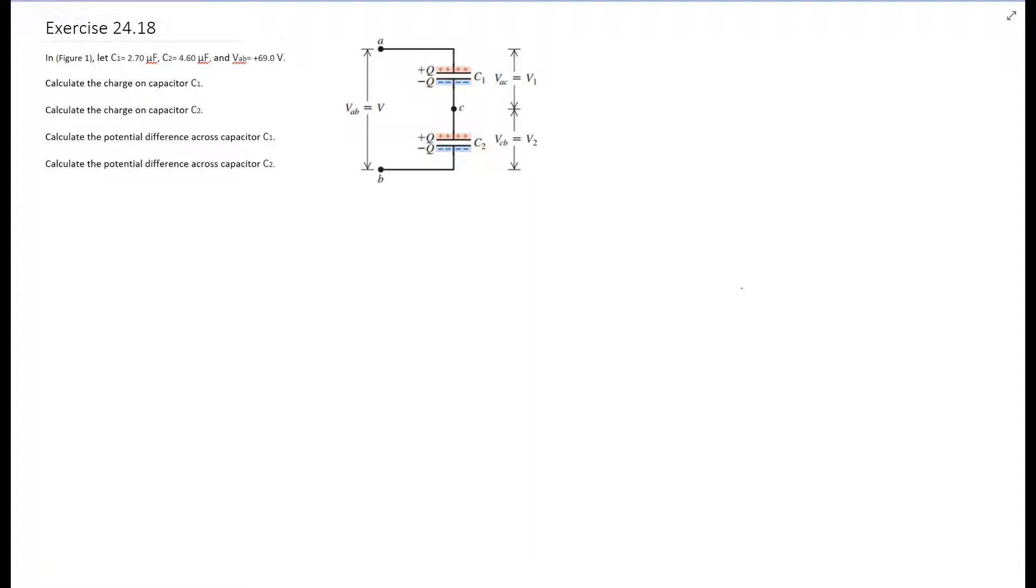The first thing to remember is that in series, charge is equal. So we have this equation for series: V equals Q times 1 over C1 plus 1 over C2, since we only have two capacitors in this case.